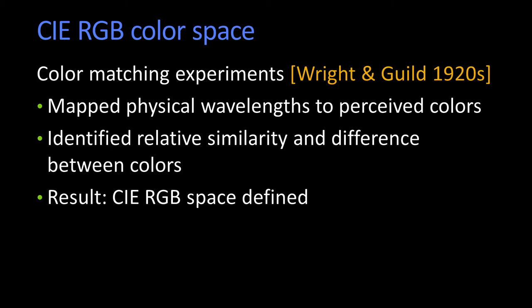They were trying to map this notion of wavelength to perceived color. As I change the wavelength, how much do you have to change the RGB in order for them to match? This process allowed you to determine when two colors are more similar to each other, and they defined what was called the CIE RGB color space.